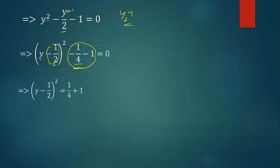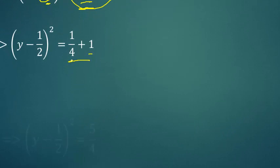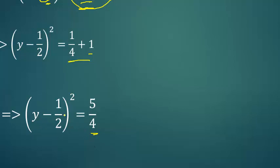We have -1 + 1/4 = -3/4, and -3/4 + 1 = 1/4. So we have 5/4. Now we have to remove this square by taking the square root on both sides.